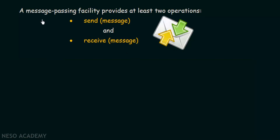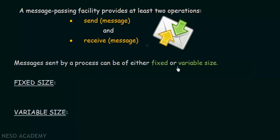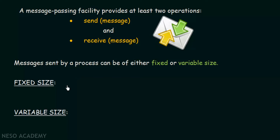Messages sent by a process can be of either fixed or variable length. When a message is being sent from one process to another, the size can be either fixed or variable. Fixed size means the message has a particular size that is set and cannot be exceeded. Variable size means the size of the message can vary — it can be big or small. Let us see the features of these two types and how easy it is to implement each.